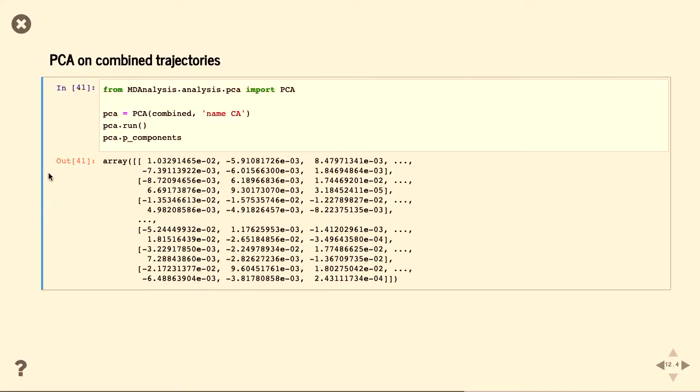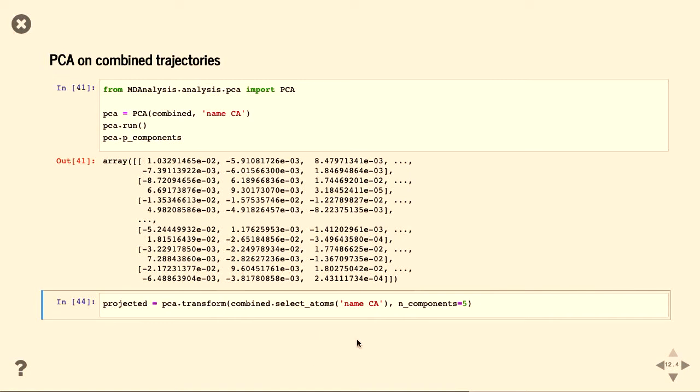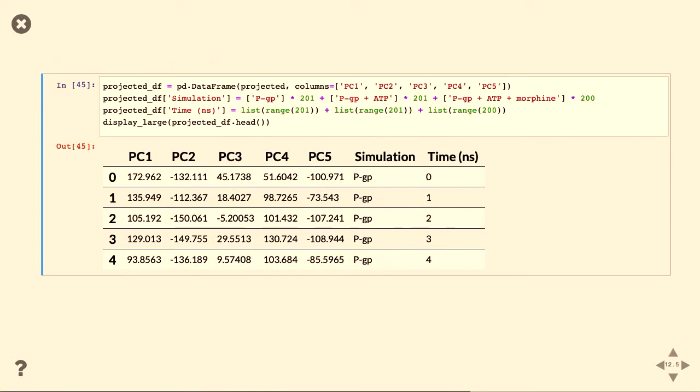Anyway, once you've joined it, the PCA is really easy. Again, MD analysis defines this function for us. Runs it, you get the principal components. And you can transform your structures into this lower dimensional space so you can plot it out easily. And this, again, I've only selected the central carbon atoms, mostly because I want to make this analysis fast. This is the data frame that you get at if you split it all out.